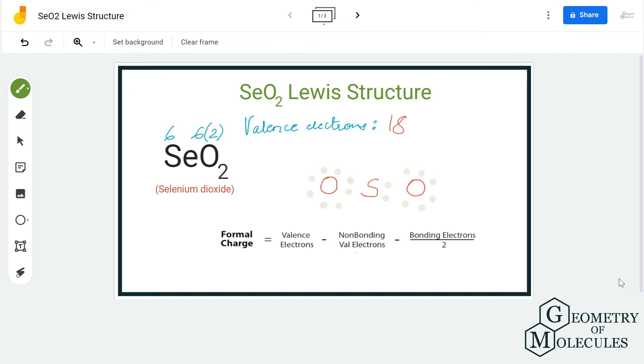After completing oxygen octets, we are left with only four valence electrons for selenium. Selenium does not have a complete octet, it just has six valence electrons. As per the rules to attain a relevant Lewis structure, all atoms must have octet-like stable structures.